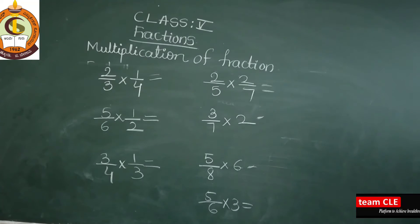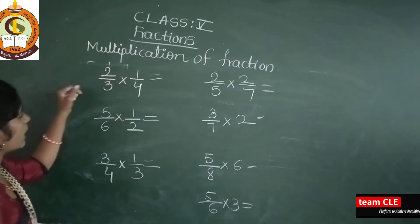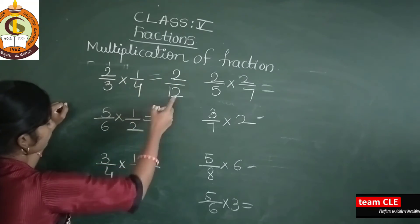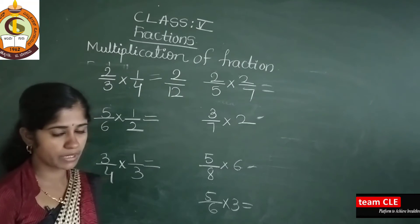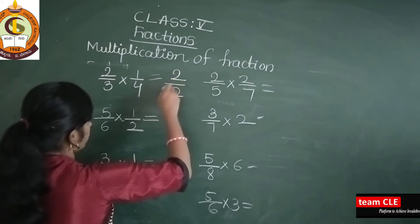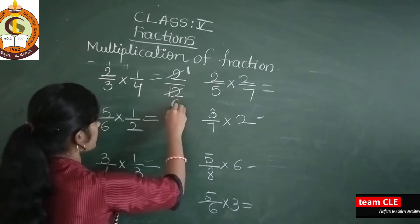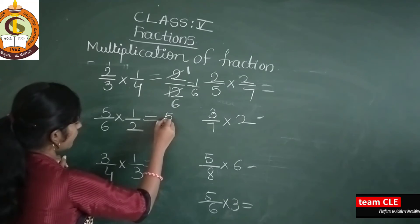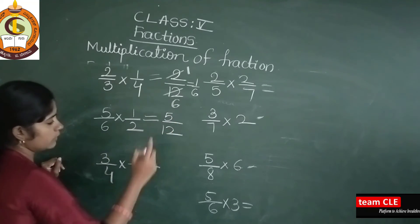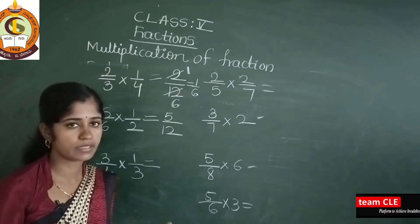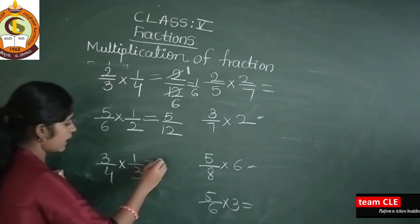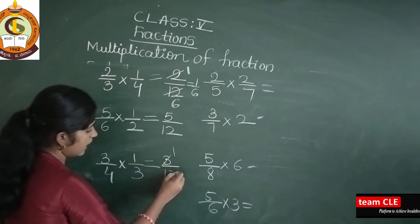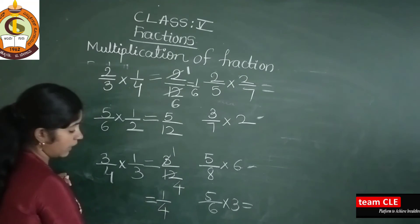See here: 2 times 1 is 2, and 3 times 4 is 12. So the answer is 2/12. You already know how to reduce the number — 2 and 12 are both in the 2-times table, so 2 sixes are 12, giving 1/6. Next: 5 times 1 is 5, and 6 times 2 is 12. Since 5 and 12 are not in any common table, 5/12 is already in its lowest form. Next: 3 times 1 is 3, and 4 times 3 is 12. 3 goes into 12 four times, so the answer is 1/4.